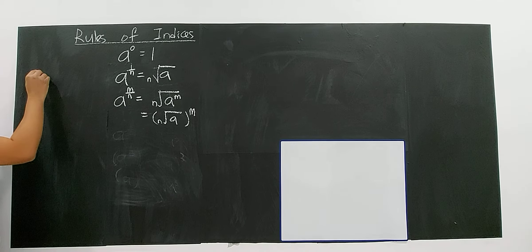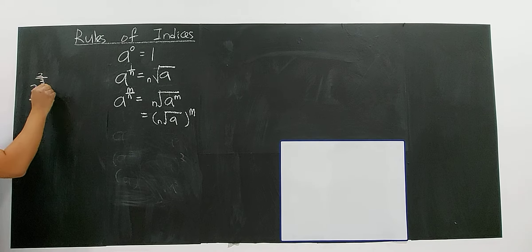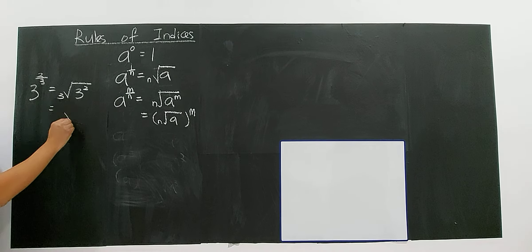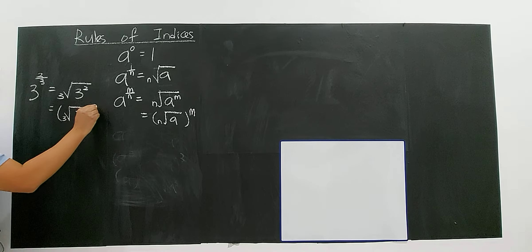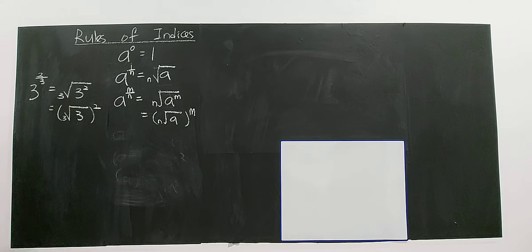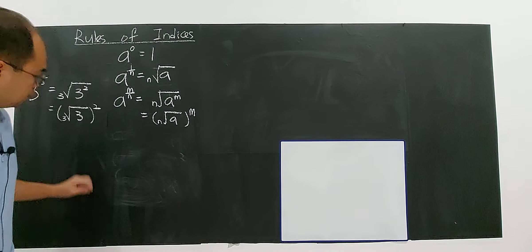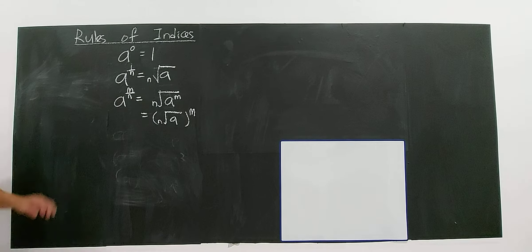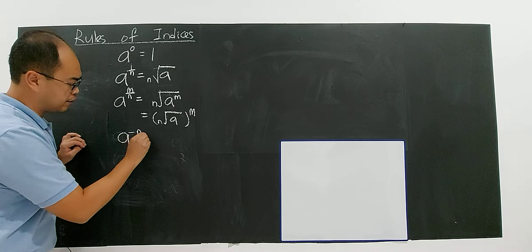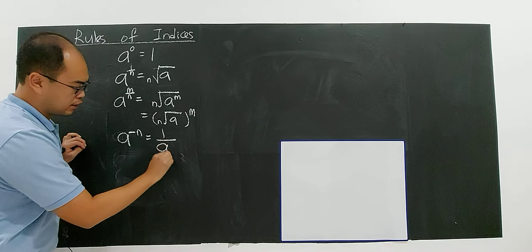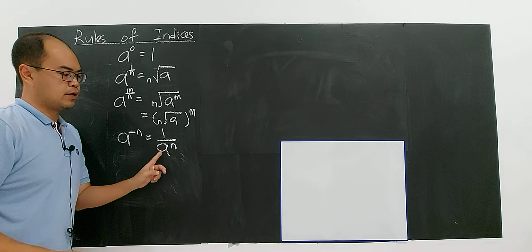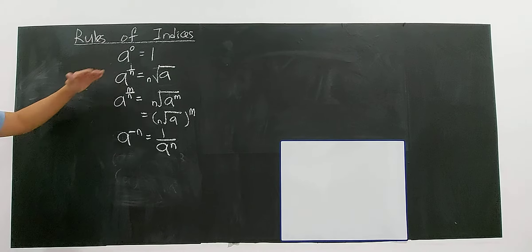For example, 3 to the power of 2 over 3: the denominator is the cube root, and the numerator gives 3 to the power of 2 inside. Or you can write it as the cube root of 3, everything to the power of 2 — they carry the same meaning. Another rule: if you have A to the power of negative N, that equals 1 over A to the power of N. This is the basic rule you need to know.